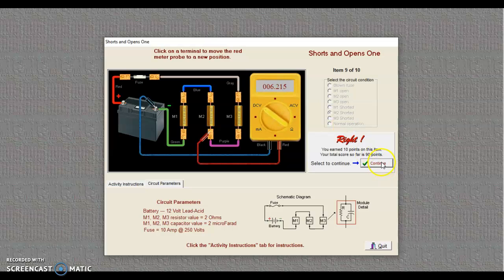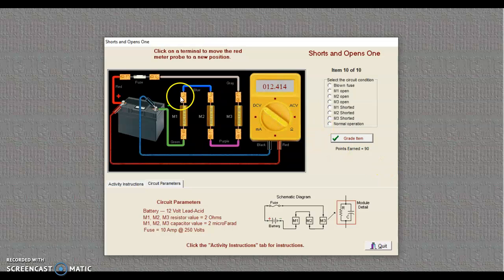So click that. Grade the item. We can move on. Looking at our last problem here. 12.4 is my source. Let's come here to the middle. Okay. We got zero, which means that there's a problem over here either with my fuse or with M3.